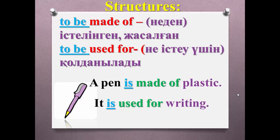Now you have to remember how and when to use these structures in sentences: 'to be made of' and 'to be used for.' For example, if we want to say what a pen is made of, we use 'made of' — 'A pen is made of plastic.' If we want to say what the pen is used for, we use 'used for' — 'It is used for writing.'